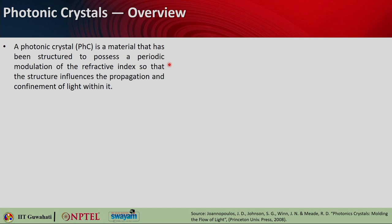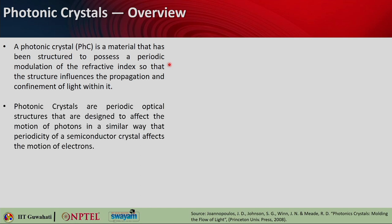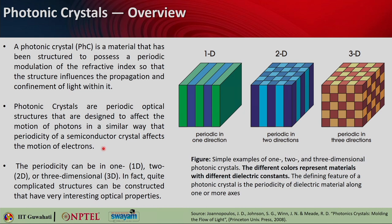The structure can influence the propagation and confinement of light within it — periodic modulation of refractive index. Photonic crystals are nothing but periodic optical structures that are designed to affect the motion of photons, in a similar way the periodicity of semiconductor crystals affects the motion of electrons. There is a direct analogy between semiconductor electrons and photonic crystals and photons. The periodicity can be in three dimensions, one dimension, or two dimensions — so you can have 1D, 2D, and 3D photonic crystals, each with very unique and interesting optical properties.